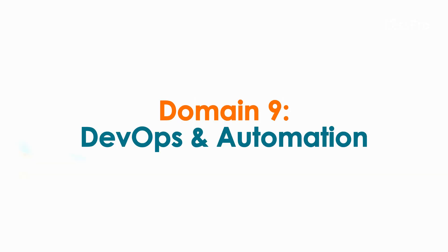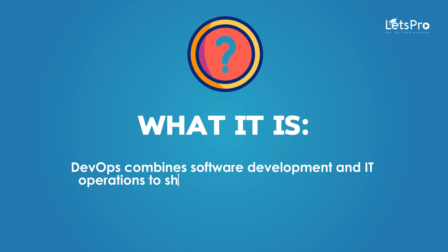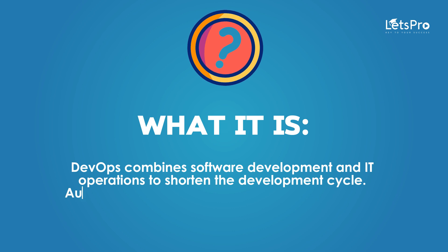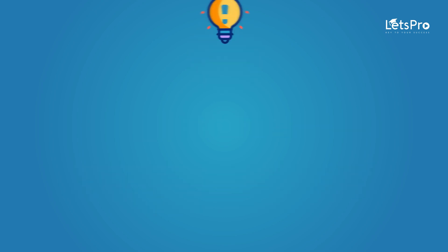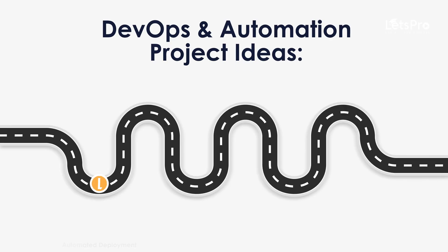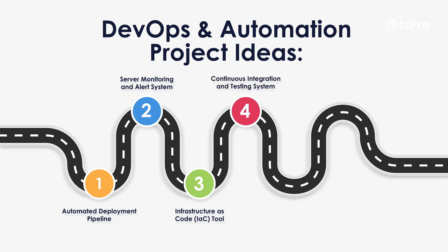Domain 9: DevOps and Automation. DevOps combines software development and IT operations to shorten the development cycle. Automation tools help with continuous integration, deployment, and monitoring. Project ideas: Automated deployment pipeline, Server monitoring and alert system, Infrastructure as code tool, Continuous integration and testing system, and Automated configuration management.